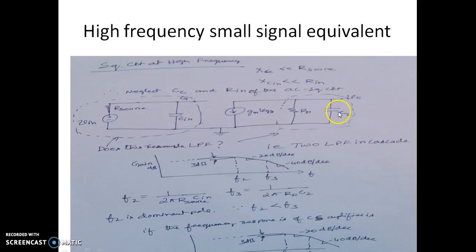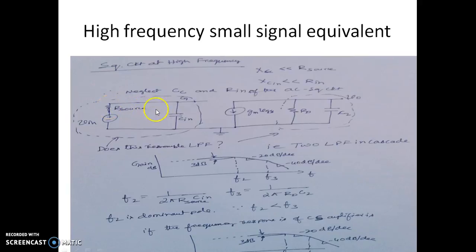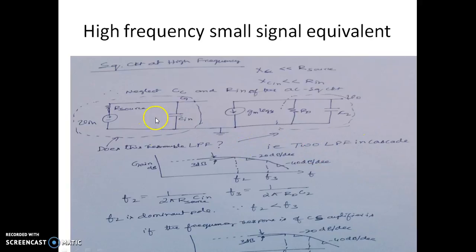We retain both C2 and Rd because this will represent a low-pass filter. This is the equivalent circuit at higher frequencies. This resistor and capacitor will form a low-pass filter, and this is also a representation of a low-pass filter. The entire equivalent circuit looks like a cascade of two low-pass filters — one with a cutoff due to R_source and Cin, and the other with a cutoff due to Rd and C2.